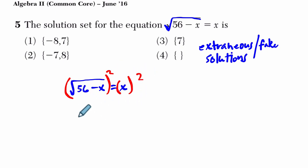And what this will do, if you square a square root, they cancel out. And what you're left with is 56 - x = x².